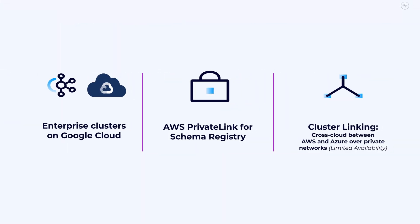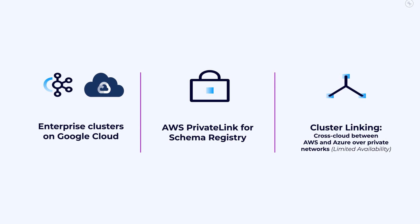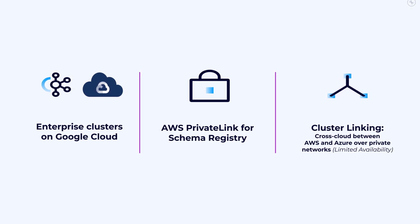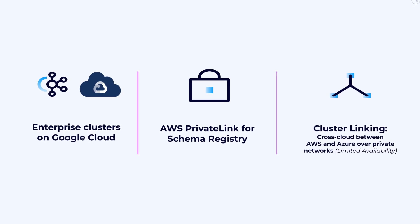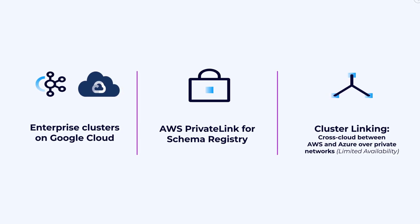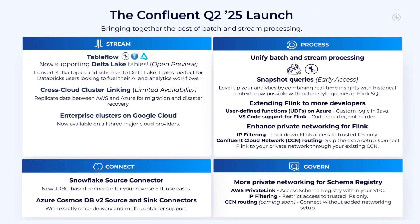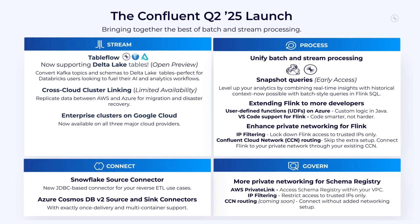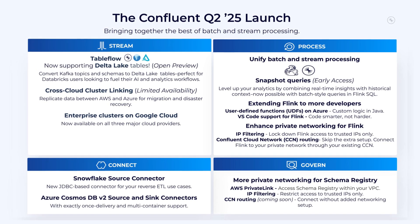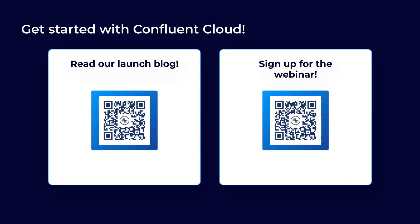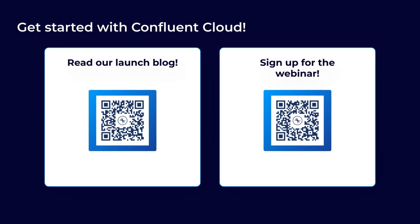But Flink and Tableflow aren't the only areas in which we've leveled up. We're excited to announce that enterprise clusters are now available on Google Cloud. Plus, AWS Private Link support is generally available, so you can access schema registry from directly within your VPC. We have even more goodness waiting for you, including new connectors, more private networking support, cross-cloud cluster linking, and more. If you want to learn more about and see these new features in action, check out the LaunchBlock or sign up for the webinar.